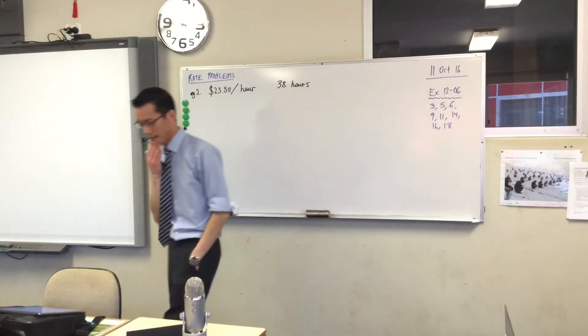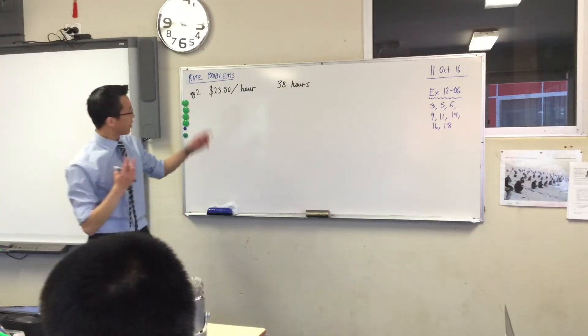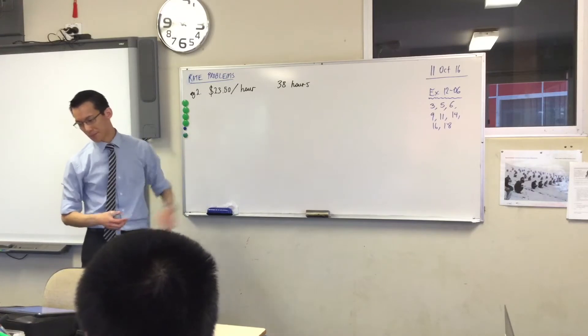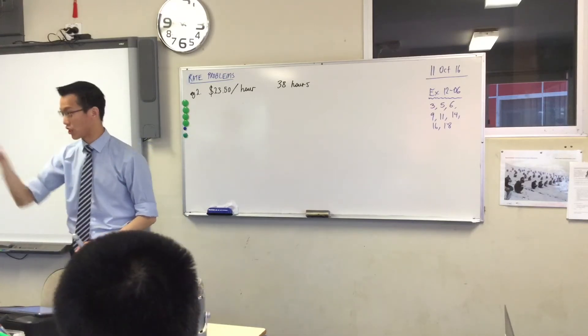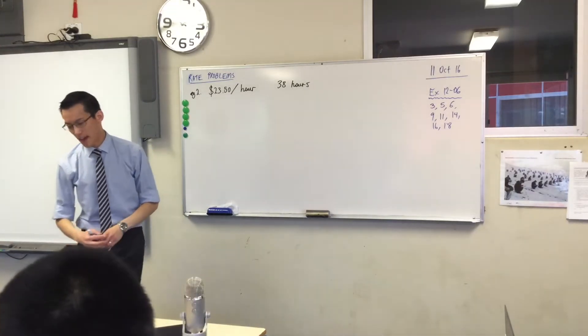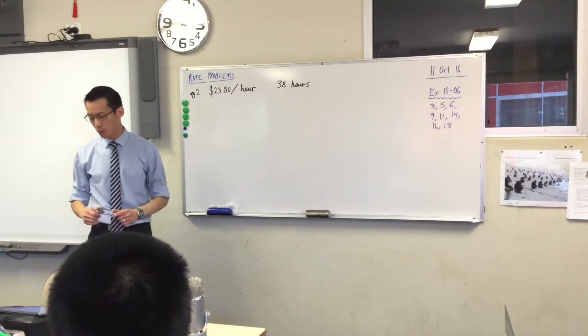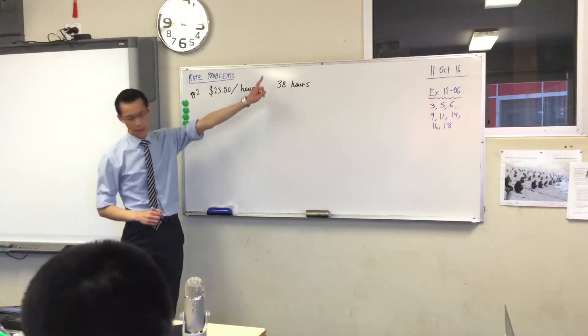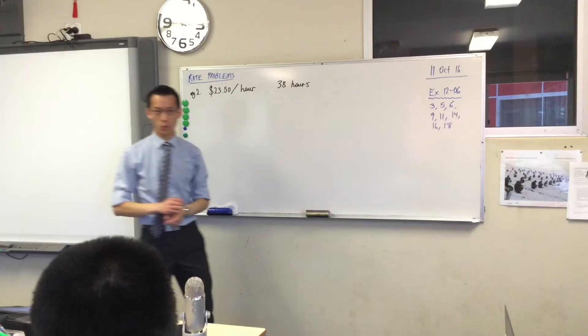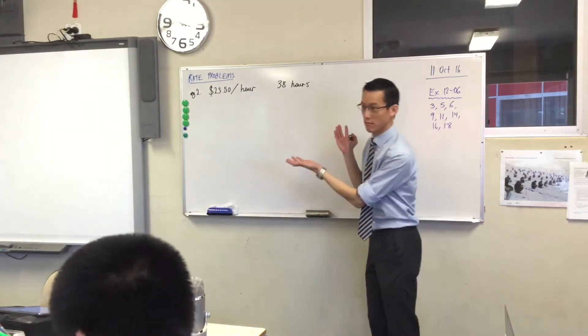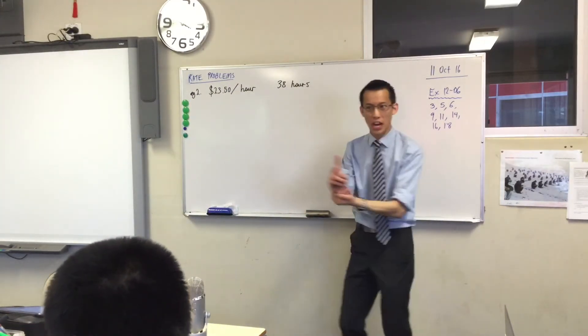Let's just quickly read the question together. Marisol earns that amount of money per hour. Again, you can see the per which gives you the clue of where the rate is.